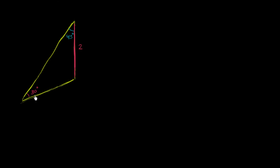We've got a triangle here where we know two of the angles and one of the sides. What I claim is that I can figure out everything else about this triangle just with this information. You give me two angles and a side, and I can figure out what the other two sides are going to be, and I can, of course, figure out the third angle. So let's try to figure that out.